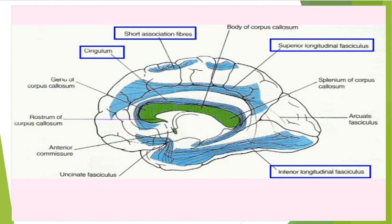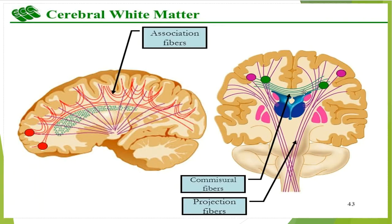Commissural fibers associate identical areas in different hemispheres. Most of the commissural fibers belong to the corpus callosum; some others run within the anterior commissure and the commissure of the fornix. Projection fibers associate the cerebral cortex with underlying nuclei of both the brainstem and the spinal cord, arising or terminating in certain areas of the cerebral cortex.